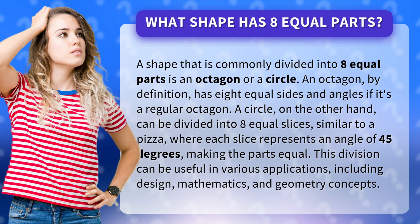A circle, on the other hand, can be divided into eight equal slices, similar to a pizza, where each slice represents an angle of 45 degrees, making the parts equal. This division can be useful in various applications, including design, mathematics, and geometry concepts.